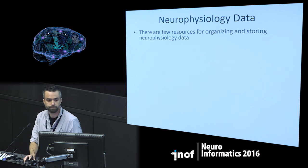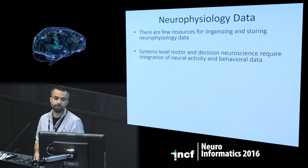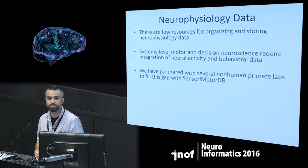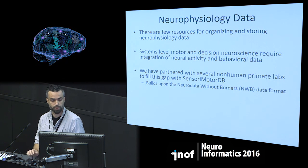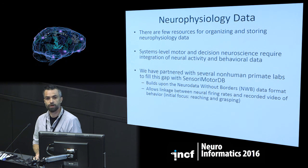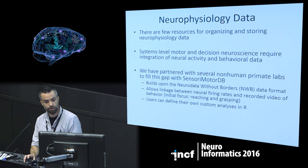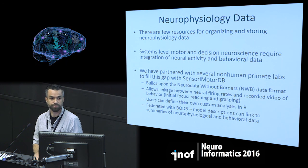Moving on to neurophysiology data — there are currently few resources for organizing and storing this type of data. For systems-level motor and decision neuroscience, we want to link neural activity to actual behavior. We partnered with several non-human primate labs to fill this gap with SensoryMotorDB. This builds on the NeuroData Without Borders data format, converting each lab's custom data formats into it. We allow linkage between firing rates of neurons and recorded videos of the animal's behavior, initially focusing on reaching and grasping. We allow users to define custom analyses in R and federate this database with BodeB.